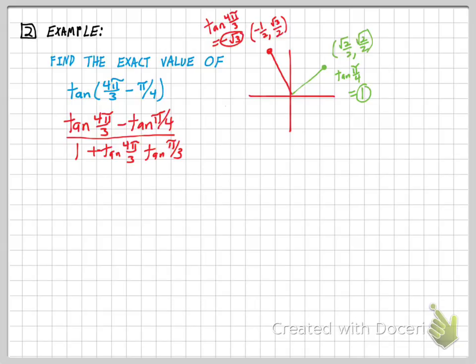So those are two values I need. If I go back down to my answer and plug those values in, I've got the tangent of four pi over three minus the tangent of pi over four divided by one plus the product of those two tangents. If I simplify a little bit, I get negative root three minus one over one minus root three. And that's my answer.